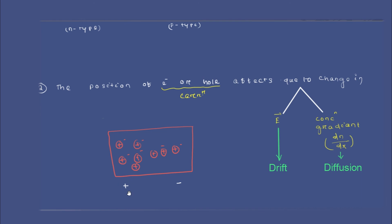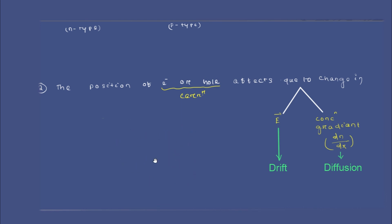Drifting happens due to electric field only. Now, drifting also happens due to an internal electric field. If you take a non-uniformly doped semiconductor, the concentration of positive ions may be higher on one side and lower on the other, creating a built-in electric field from left to right. Due to this built-in electric field, the electrons and holes inside the semiconductor get affected, causing drift current — both electron current and hole current.